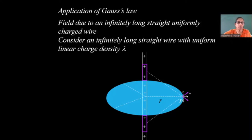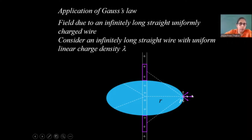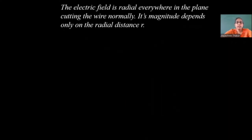The horizontal components add up and give a resultant. So the electric field at this point will be radial, in the radial direction. We find that such pairs of elements will always exist for which the vertical components cancel and the field is always radial. So everywhere, for any point along an infinitely long charged conductor, the electric field is always in the radial direction.